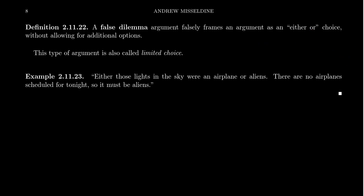So imagine the following. Either those lights in the sky were aliens or an airplane. I looked at the manifest at the airport. There were no airplanes scheduled for tonight, so it must be aliens. This is an example of a false dilemma. They're claiming that they saw something in the sky. It could only be an airplane or an alien. They ruled out the possibility of airplanes, therefore it has to be aliens.